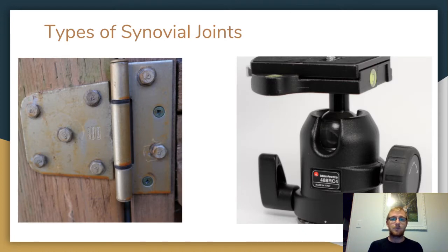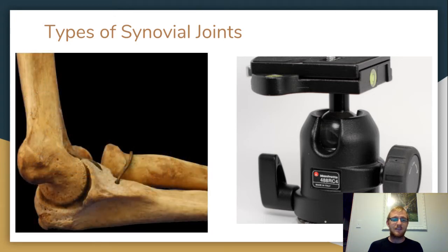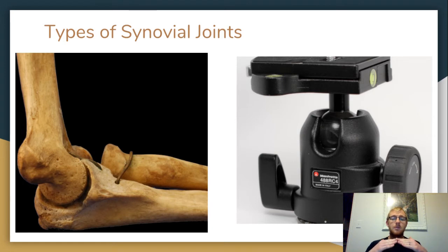The two types of synovial joints we're going to be talking about today are, first, a hinge joint. I've got a picture of a hinge there. The elbow is a hinge joint. It's called a hinge joint because it opens and closes just like a hinge — those are the movements it does. It opens and closes, and we'll talk about the specific names for those movements in just a second.